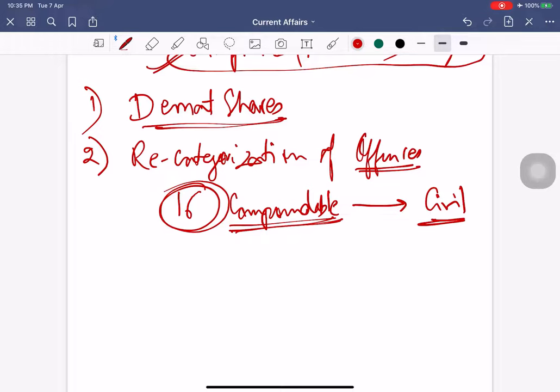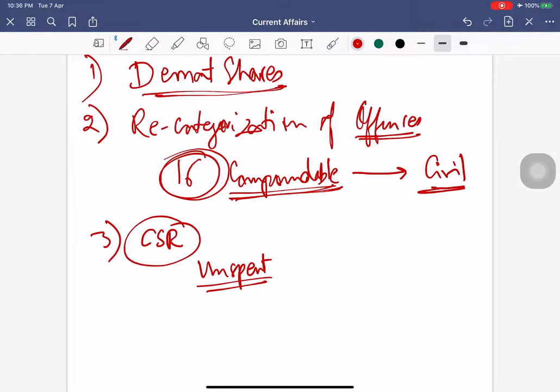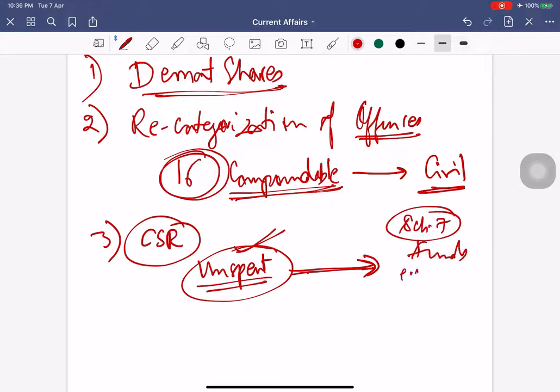Third is corporate social responsibility. Under this bill, any unspent annual CSR fund must be transferred to one of the funds under Schedule 7 of the act within six months. You know companies have to spend 2% of their average profit on CSR. If any unspent CSR funds remain, those funds have to be transferred to Schedule 7 funds, for example Pradhan Mantri Relief Fund for disasters and calamities, within six months of the end of the financial year.